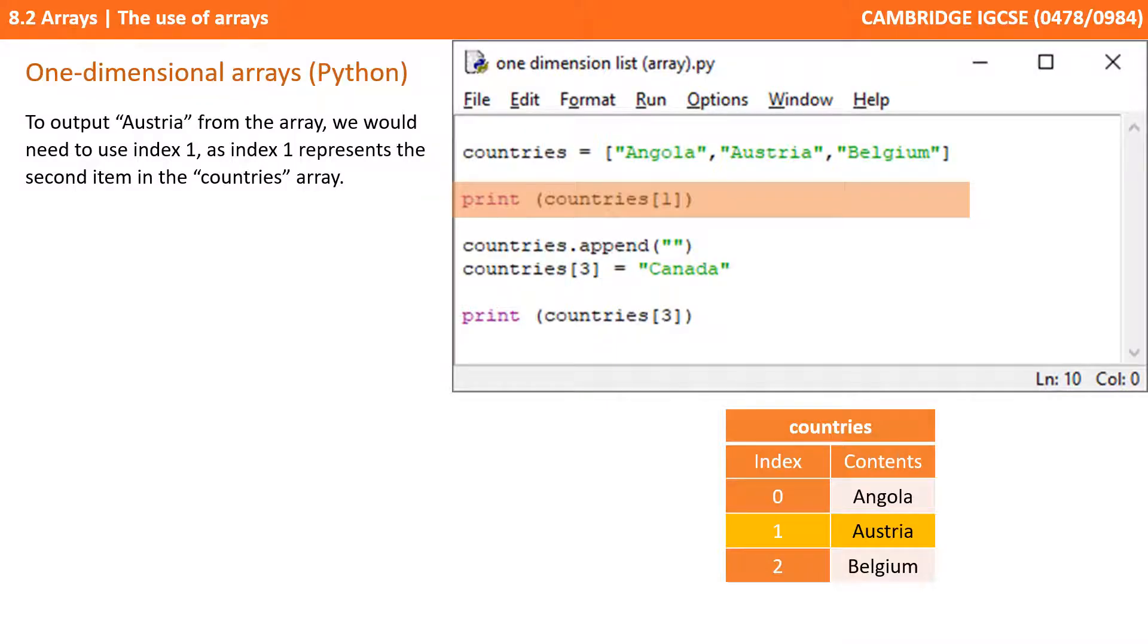To output Austria from the array, we would need to use index 1, as index 1 represents the second item in the country's array.